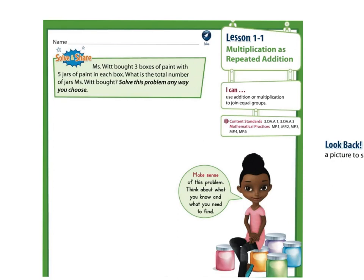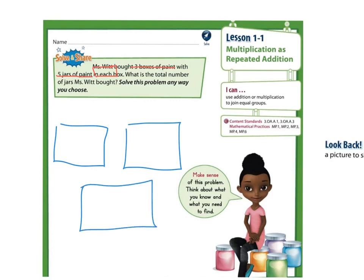First, take note of what the problem tells you. Miss Witt bought 3 boxes of paint with 5 jars of paint in each box. So what I might start doing is draw 3 boxes of paint. Here are my 3 boxes, and if I remember, looking up here, we are told that there are 5 jars of paint in each box.